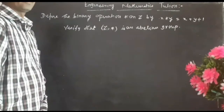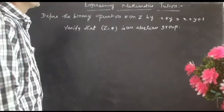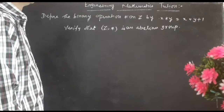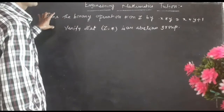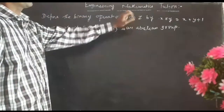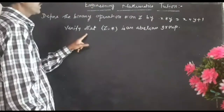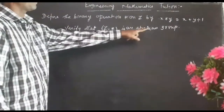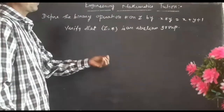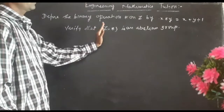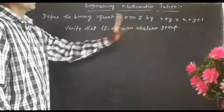Good morning students. In this video, we will talk about the example of the problem. What is the problem? Define the binary operation star on Z by x star y is equal to x plus y plus 1. Verify that Z comma star is an abelian group. To prove Z comma star is an abelian group, we have to first prove Z comma star is a group, and secondly prove Z comma star is abelian.